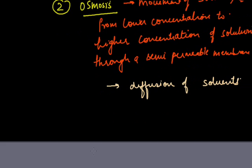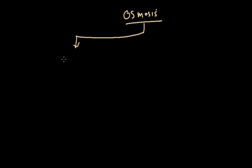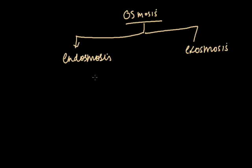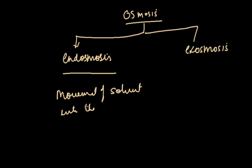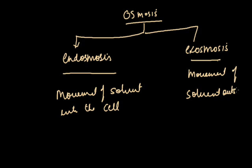Osmosis is of two types: endosmosis or exosmosis. Endosmosis is the movement of solvent into the cell. On the other hand, exosmosis is the movement of solvent outside the cell.